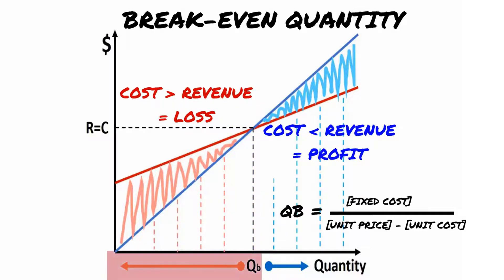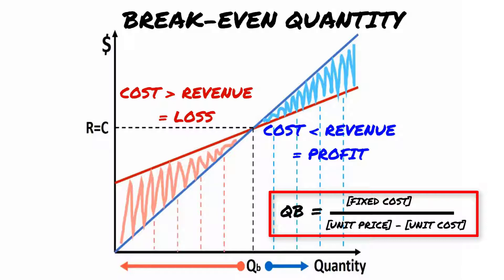Below this quantity, the company is losing money and above it, the company is making a profit. The break-even quantity is determined by dividing the fixed costs by the difference between unit sale price minus unit variable cost.